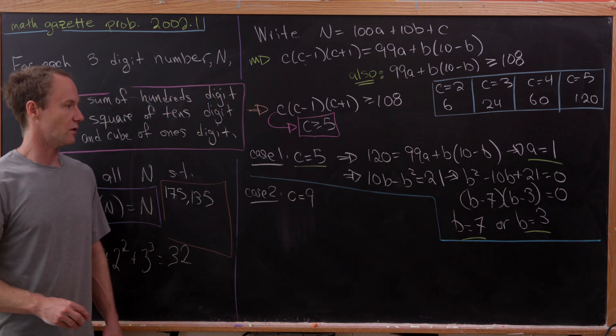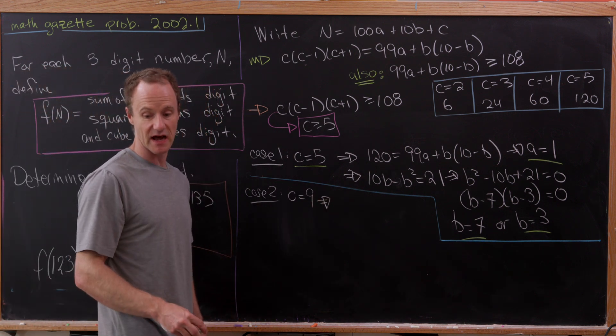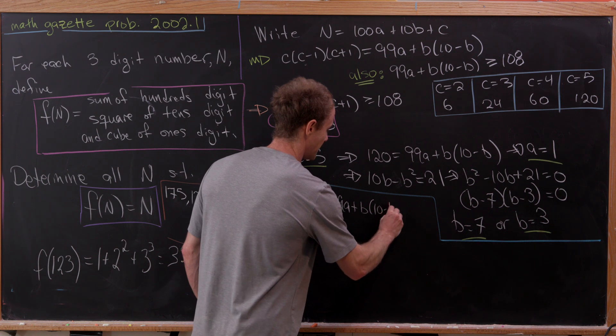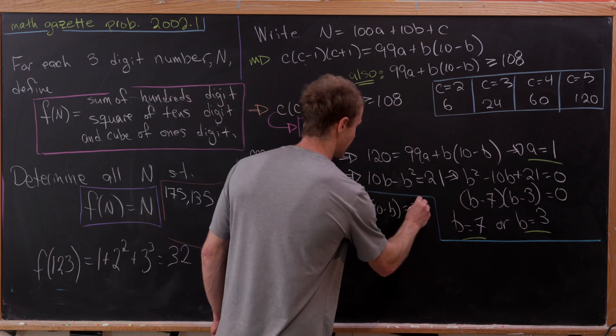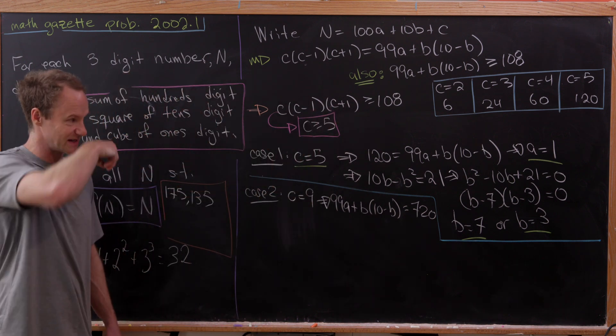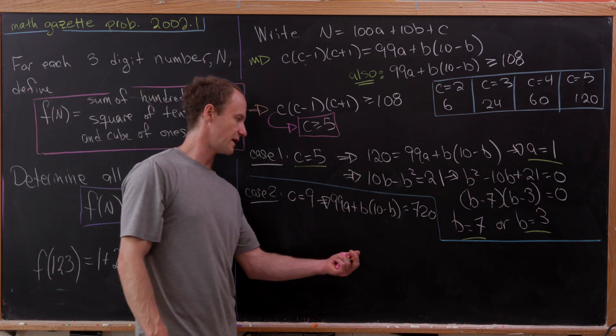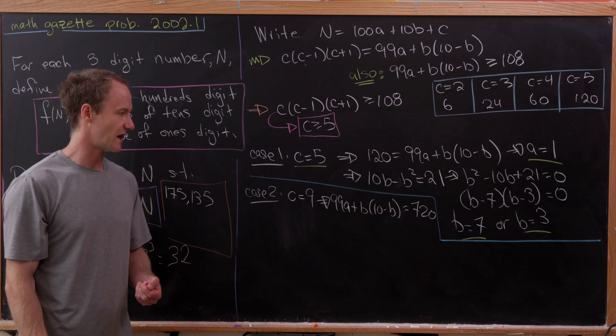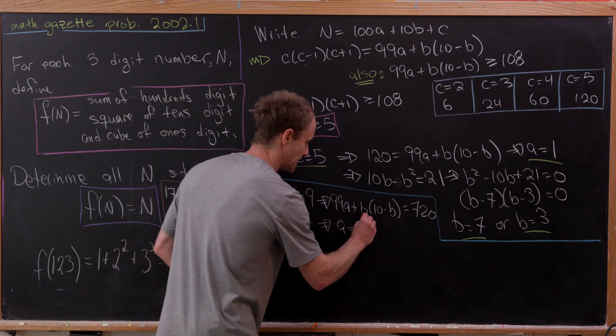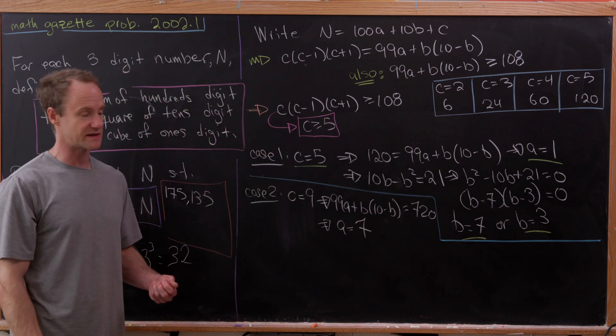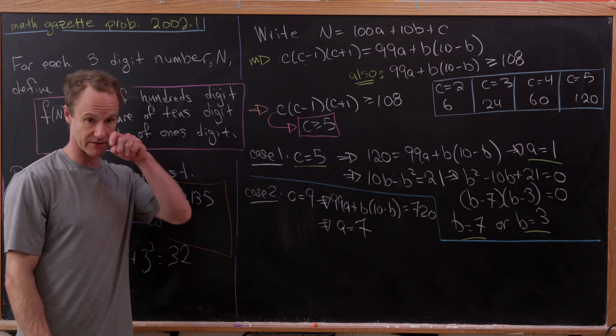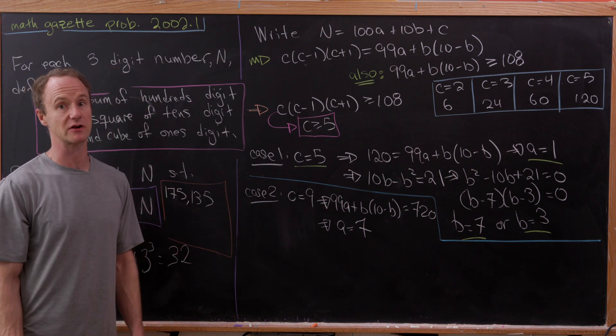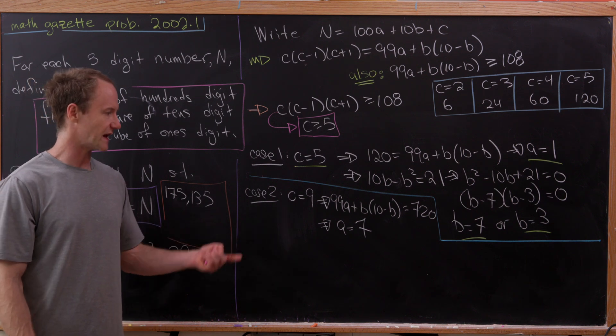So what is that going to give us? Well, if c is equal to 9, we'll in fact get 99a plus b times 10 minus b is equal to 720. So that's what you get for this if c is equal to 9. But now, by the inequality that we had for b times 10 minus b, recall that that was between 9 and 25, we can boil this down to a must be equal to 7. Smaller than 7, because of the maximum size of this b times 10 minus b, you won't achieve 720. And then if a is 9, well, you're too big. This 99 times a is clearly larger than 720. Okay, so we get a is equal to 7.